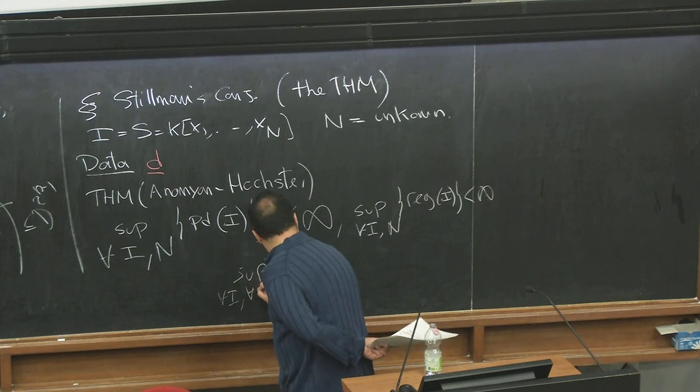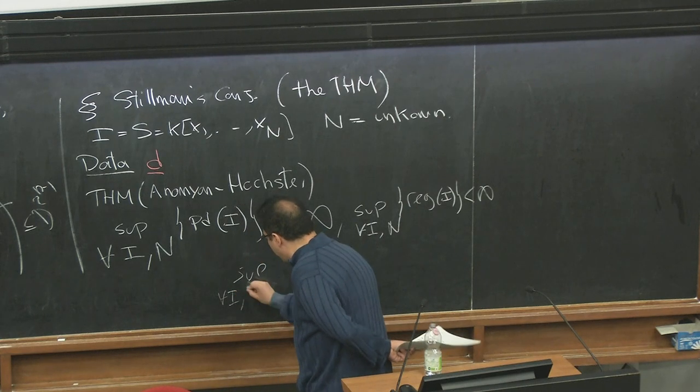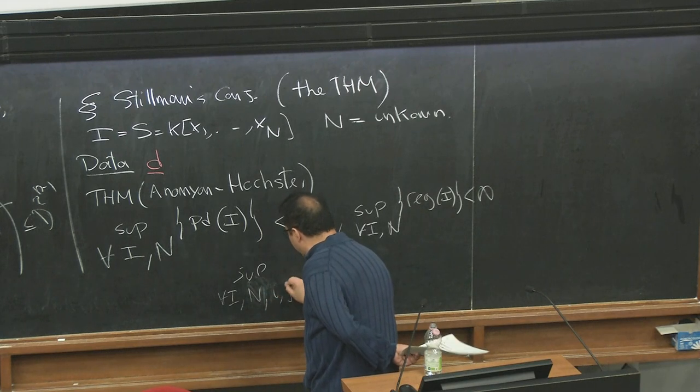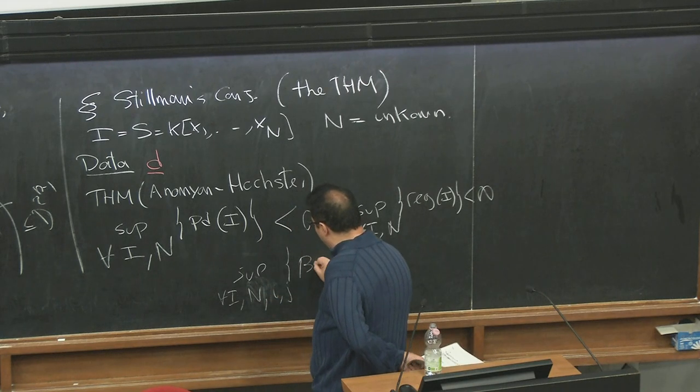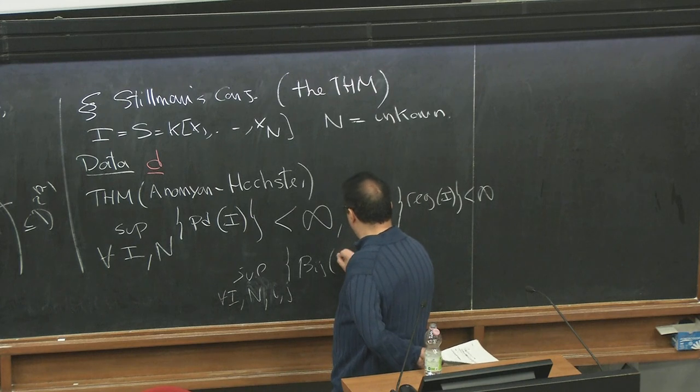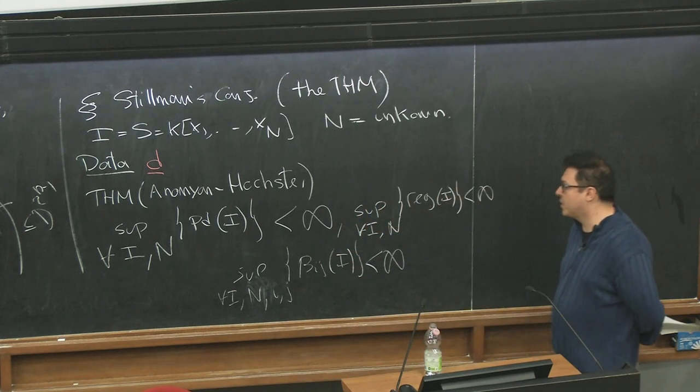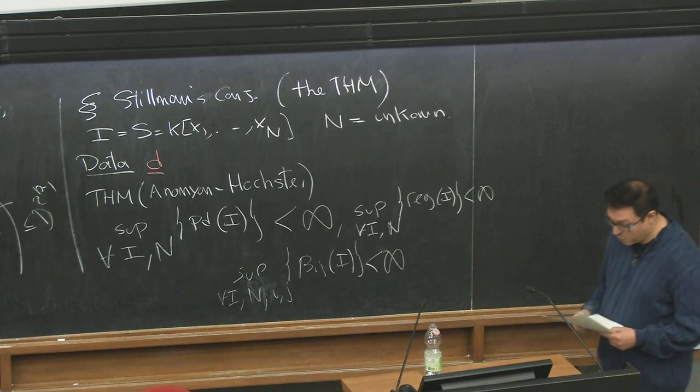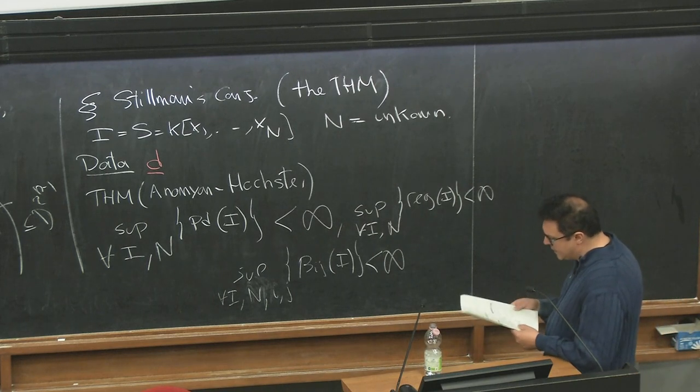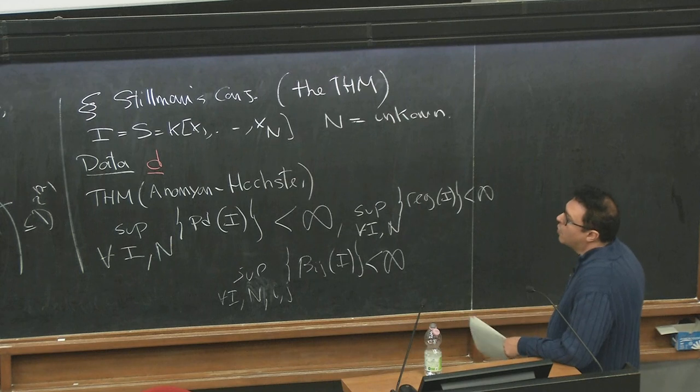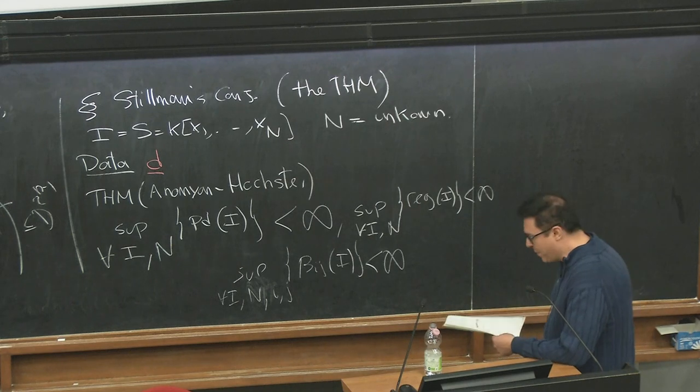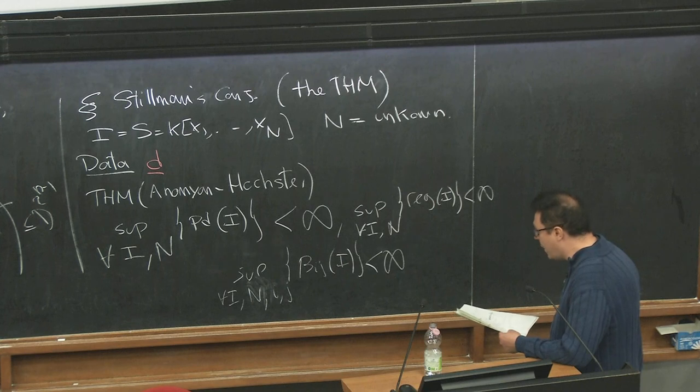Similarly, from a byproduct of the proof also from their paper, one gets bounds on basic data that you can get from the resolution. For instance, regularity of I is finite, and the supremum for every I, for every N, for every I and J of the value of the Betti number B_IJ of I is also finite. Again, not clear what the value, what the bound can be, but there's a horrible recursion from this proof. It's unthinkable what the values actually are.